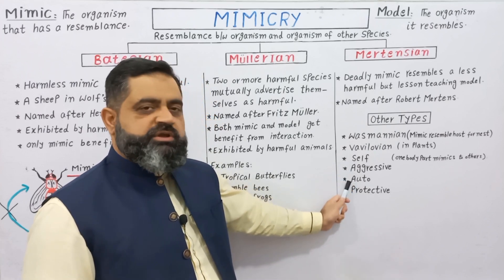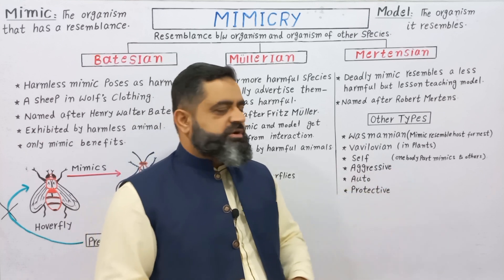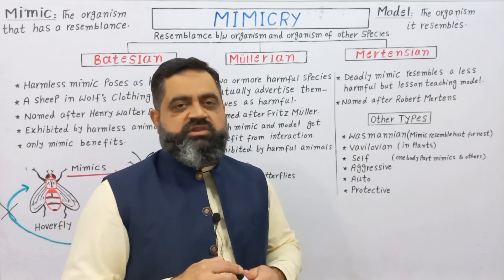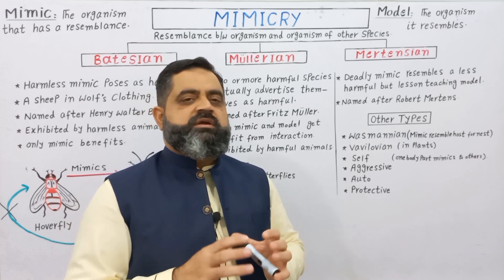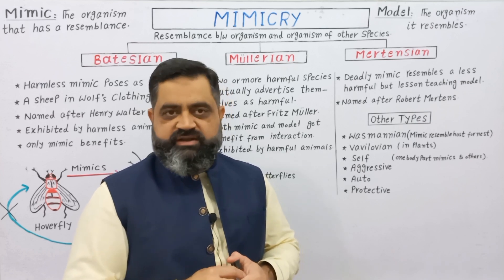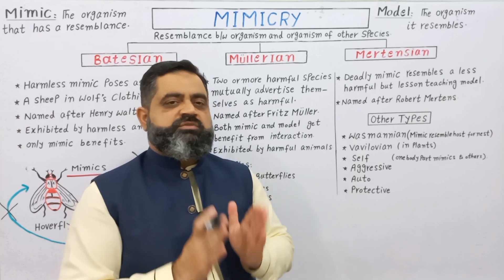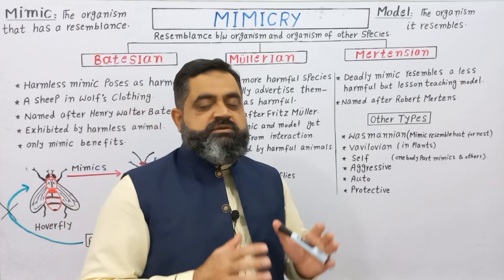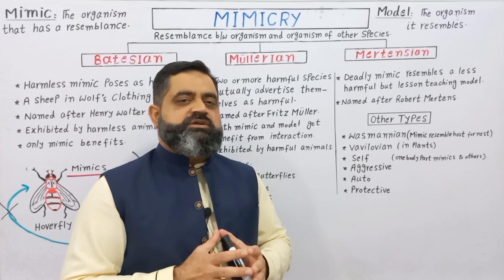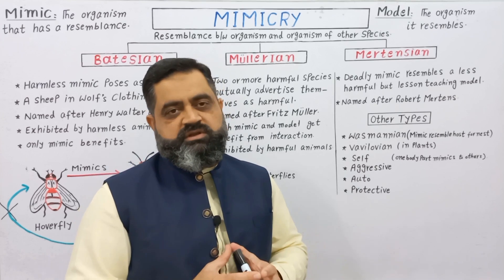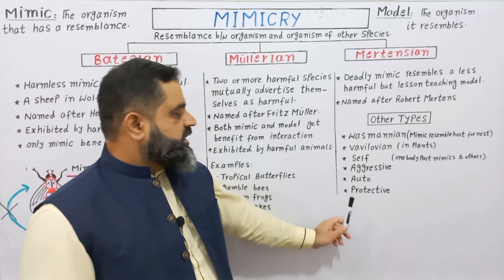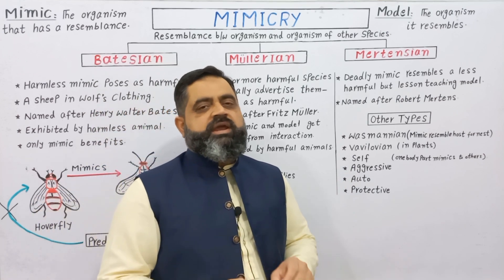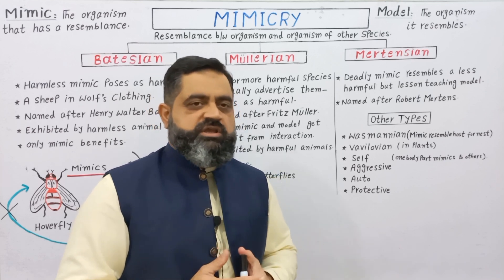Self and auto mimicry are similar — in this condition, one body part mimics another. For example, some owls usually have eyes in the front, but sometimes they mimic as if their eyes are present on the back of the head, so they are protected from attacks of predators. In aggressive mimicry, some animals mimic the shape of a very dangerous animal and are protected from the attacks of predators. Automimicry is similar to self mimicry. There are some other examples which you will study in your textbook.